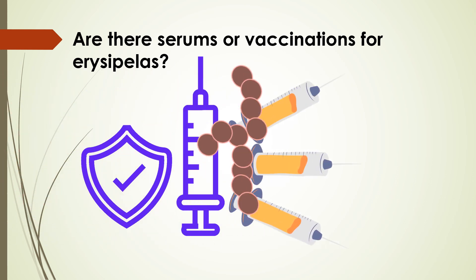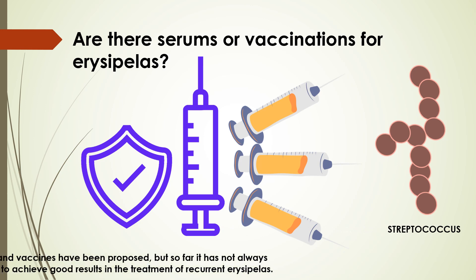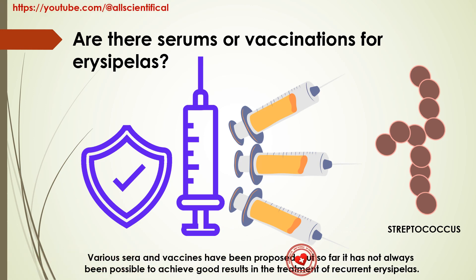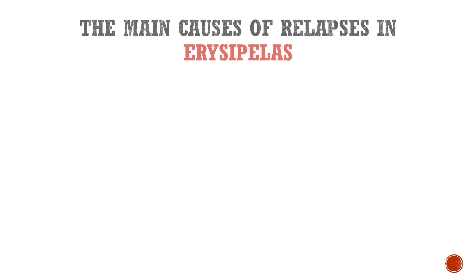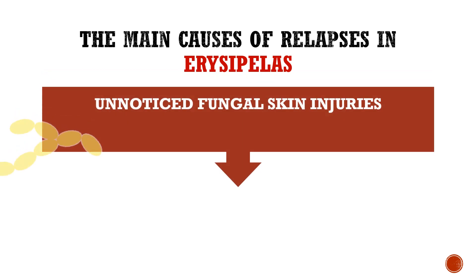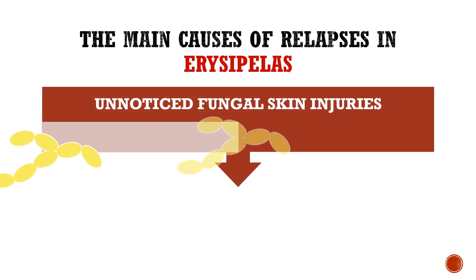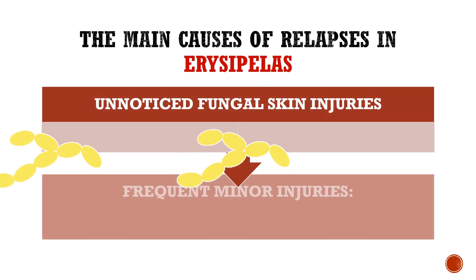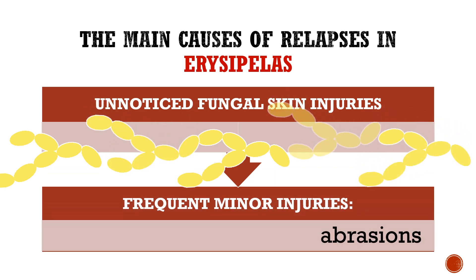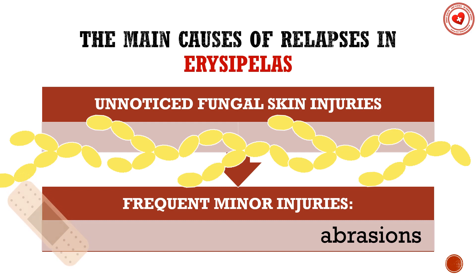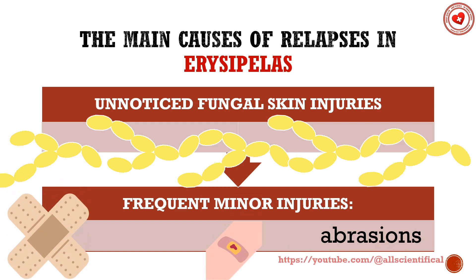Are there serums and vaccines for erysipelas? Various serum vaccines have been proposed, but so far it has not always been possible to achieve good results in the treatment of recurrent erysipelas. Often the cause of recurrence is very simple — for example, unnoticed fungal skin lesions, vague minor injuries, or abrasions.